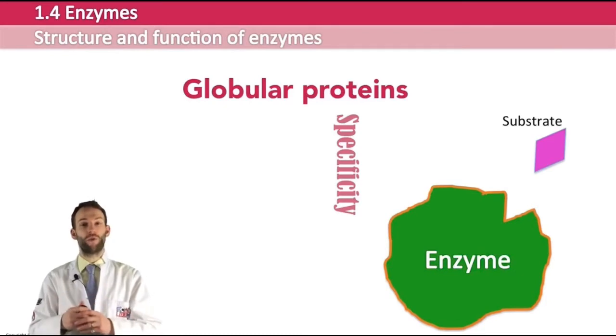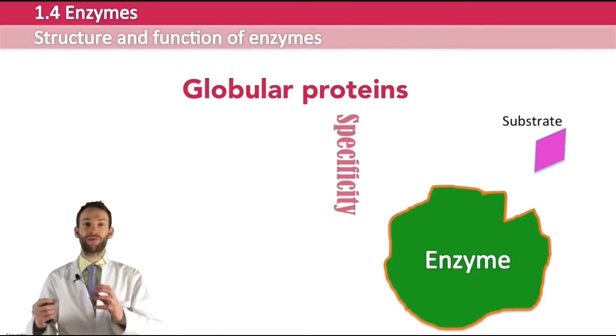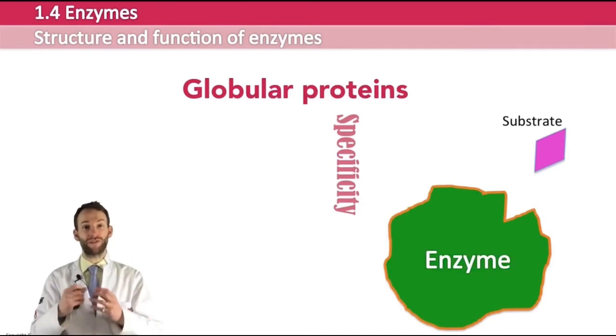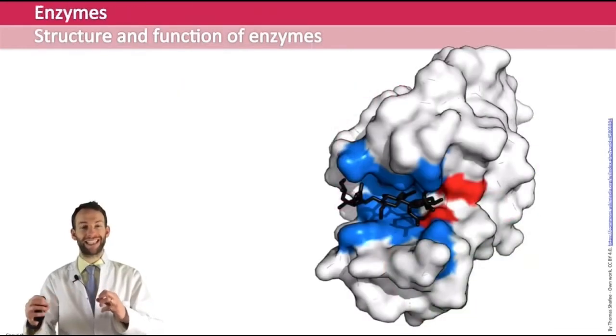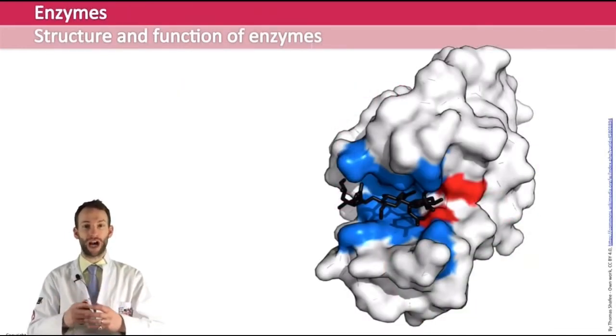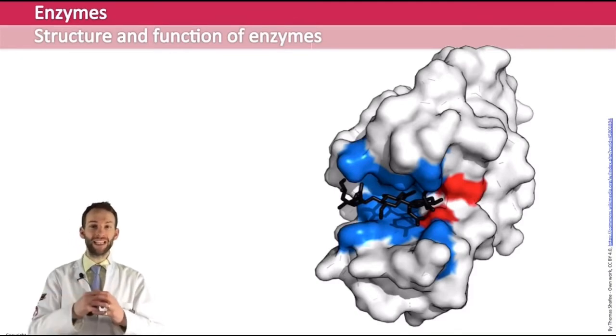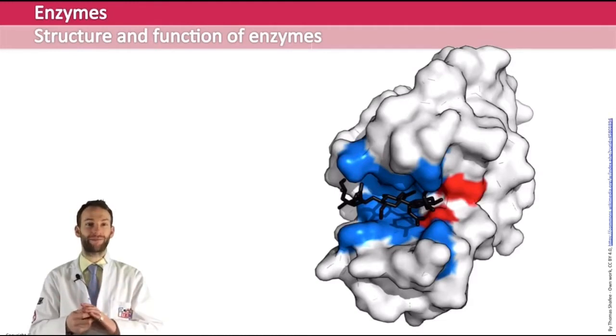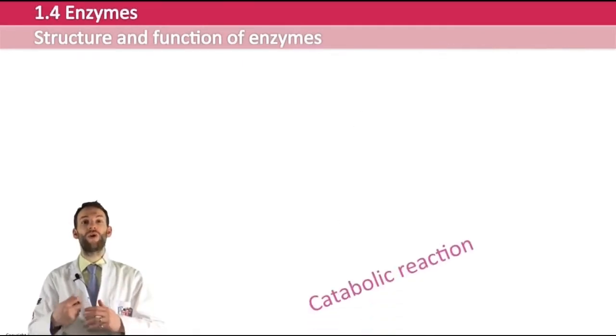The active site - this bit where the substrate is going to bind - the substrate is the molecule that the enzyme will act on. The active site where the substrate binds is very, very small. It's a very small part of that enzyme and its shape will be dependent on that amino acid sequence and how they fold up. The substrate will bind into it by forming little weak and non-covalent interactions with the R groups of the active site's amino acids. Enzymes can either help break something down, which is called a catabolic reaction, or they can build something up, which is an anabolic reaction.